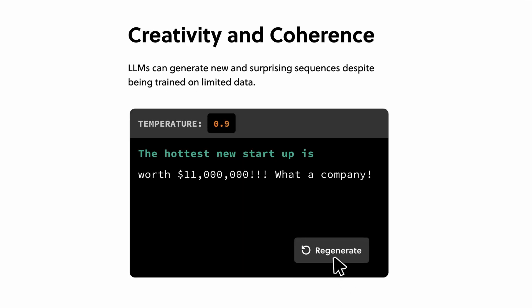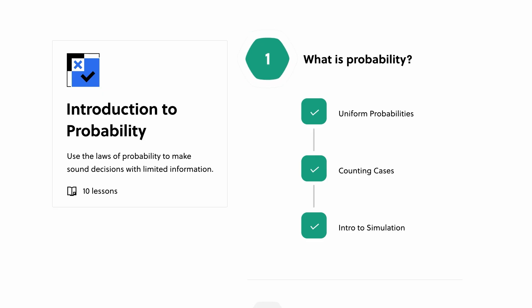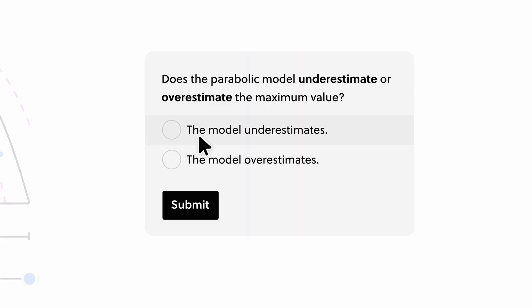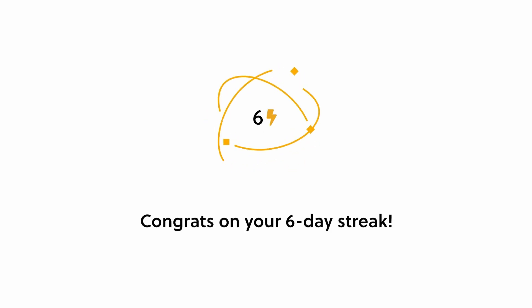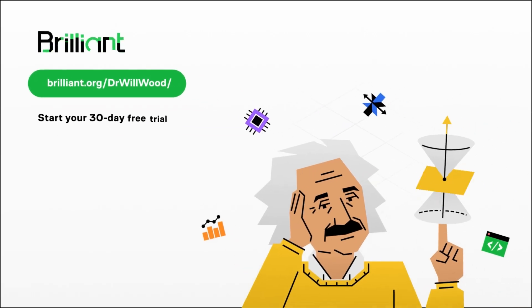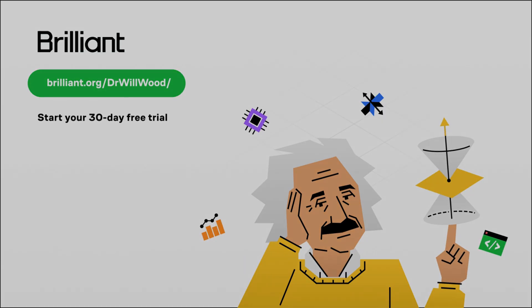I've been using Brilliant to brush up on my probability skills and I love how intuitive they make everything feel. Everything's really hands-on and based on real life scenarios. It really does make learning easier and for me regardless of what I've done that day doing a little bit of studying leaves me feeling like I've done something productive. To try everything Brilliant has to offer for free for a full 30 days visit brilliant.org slash drwillwood or click the link in the description. You'll also get 20% off an annual premium subscription. Thanks for watching I'll see you next time.